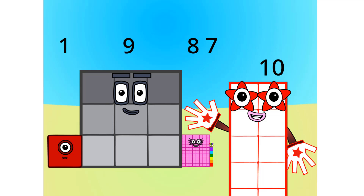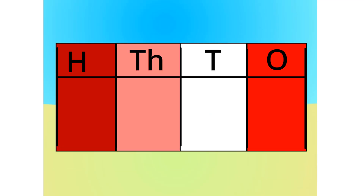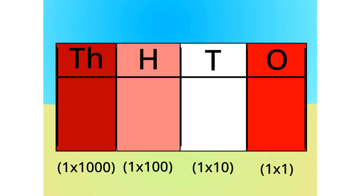Let me carry on with the first method. Do you notice anything with this table? The number multiplies by ten each time it goes left one column. Because it multiplies by ten each time, we call this system base ten.